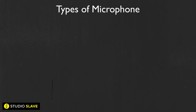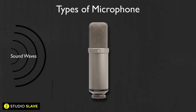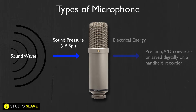All microphones are known as a transducer, and what this basically means is that to transduce something is to change it from one energy to another. A microphone is changing sound pressure energy and transducing it into electrical energy, which we can then use inside our DAW or software, or play back through any sort of digital system.